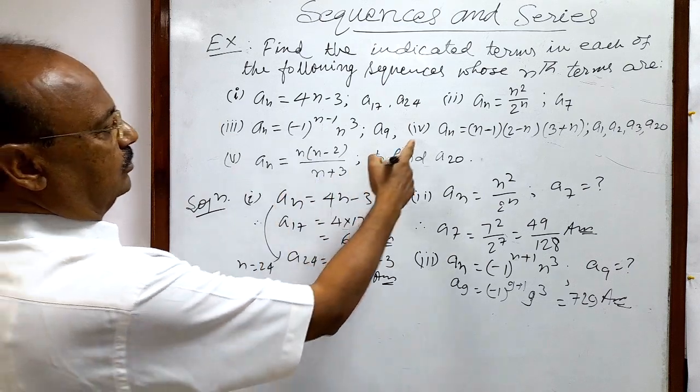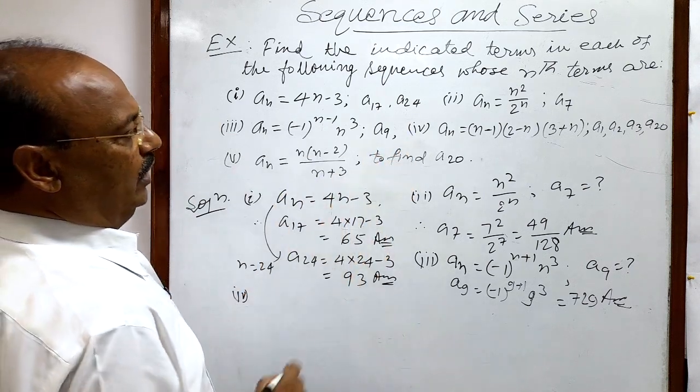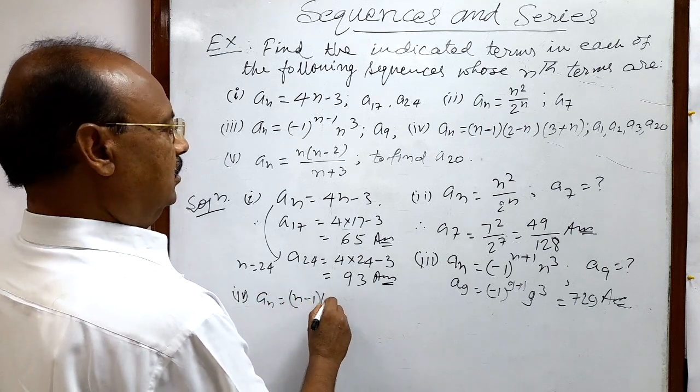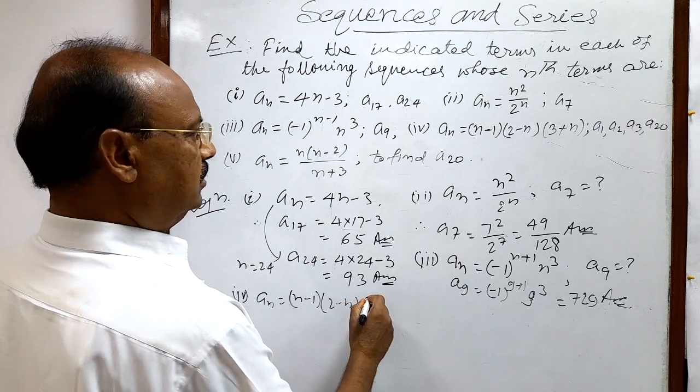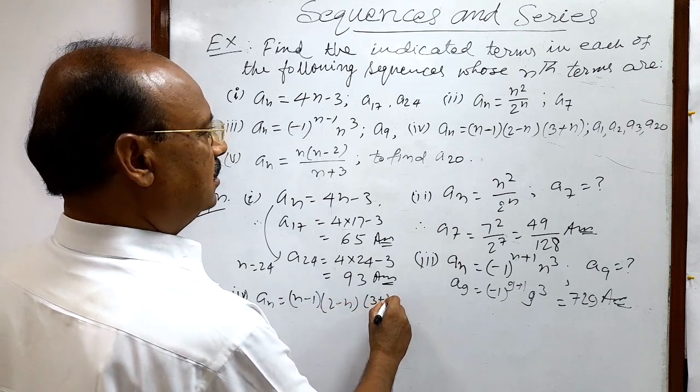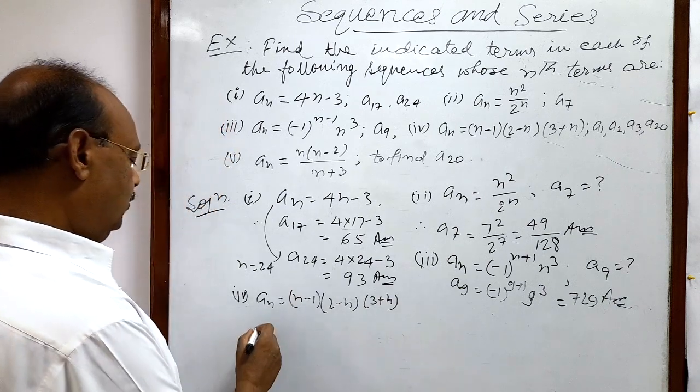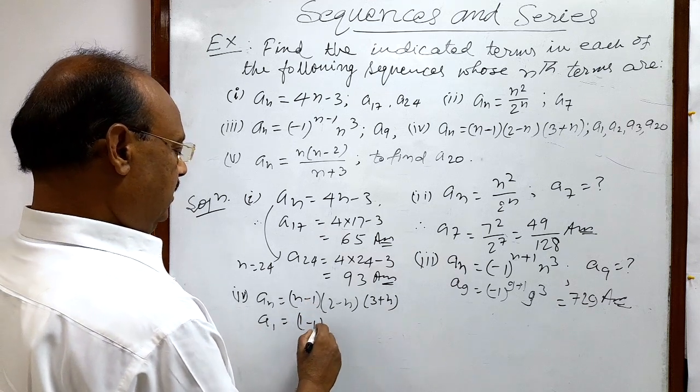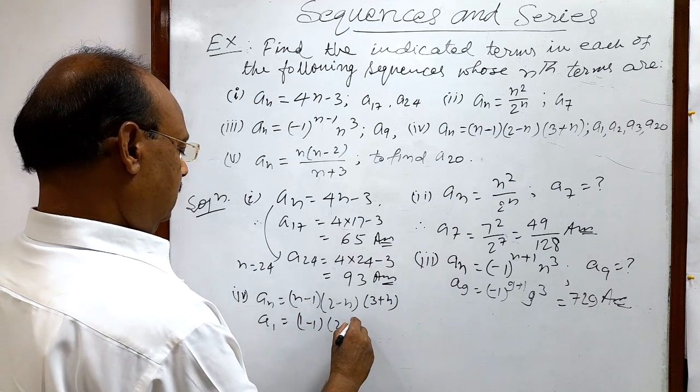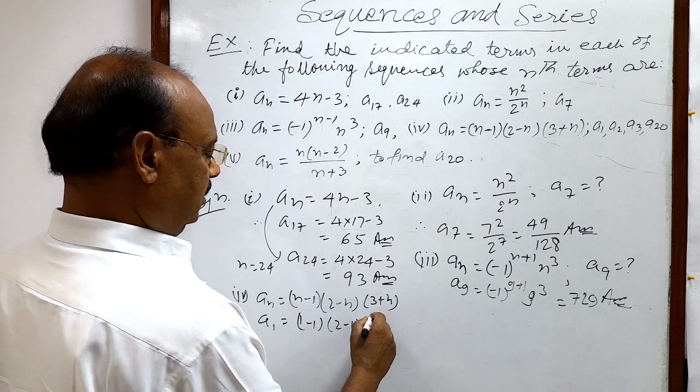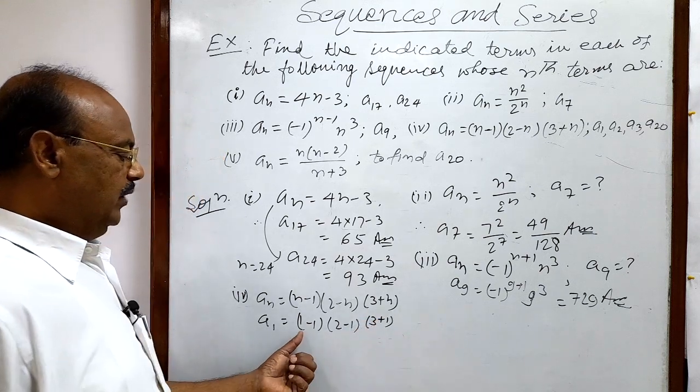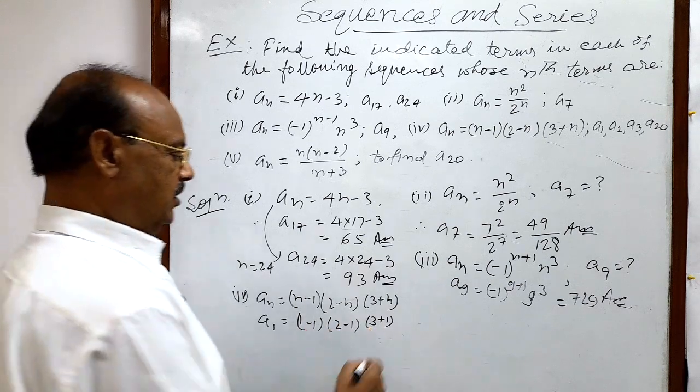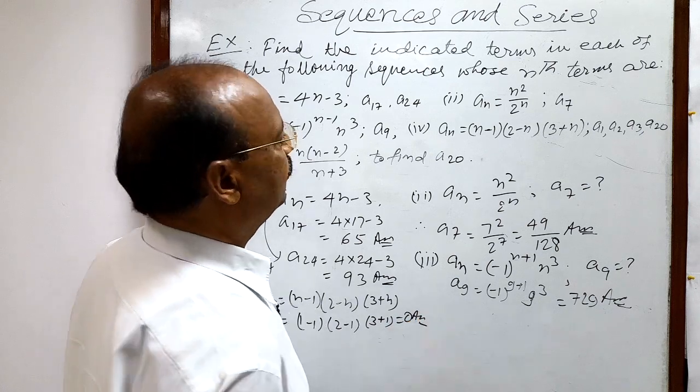Now let us see fourth question. Here general term nth term is given which is n minus 1, 2 minus n, and 3 plus n. So, how to get a1 - replacing n by 1. So this is 1 minus 1, 2 minus 1, and 3 plus 1. Here 1 minus 1 is 0, so 0 into something, 0 into 1 plus 4, that is 0. This is the answer.